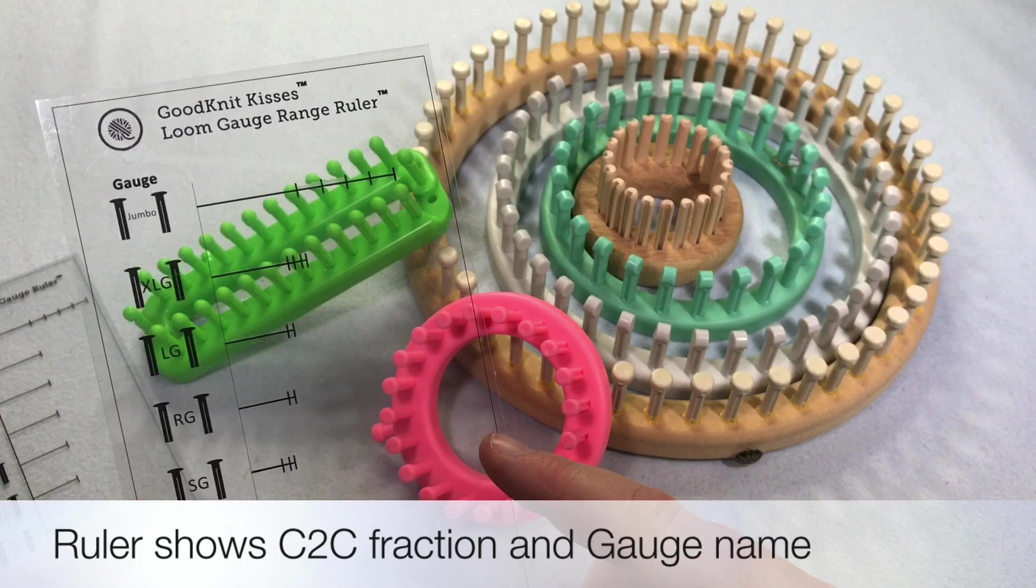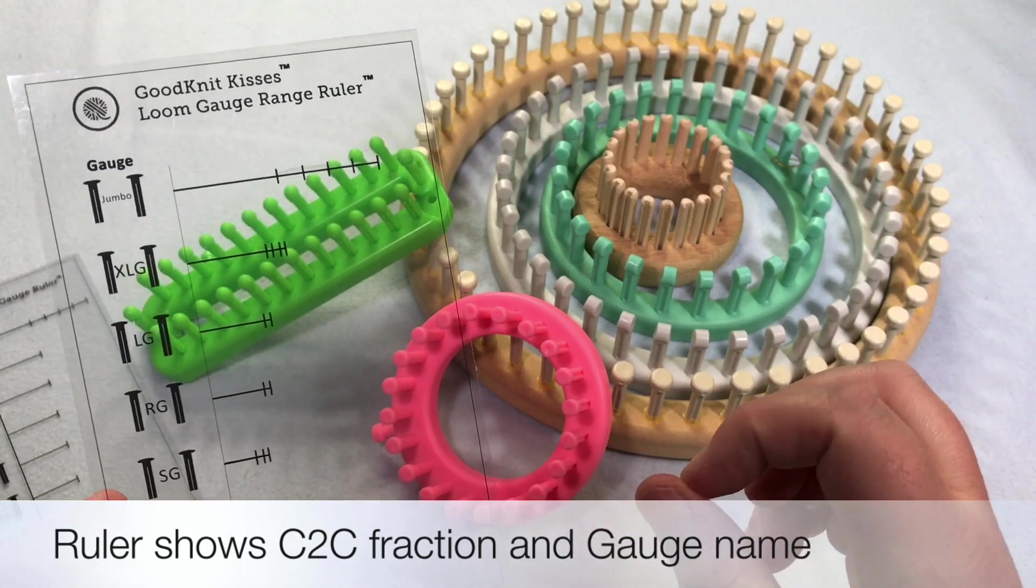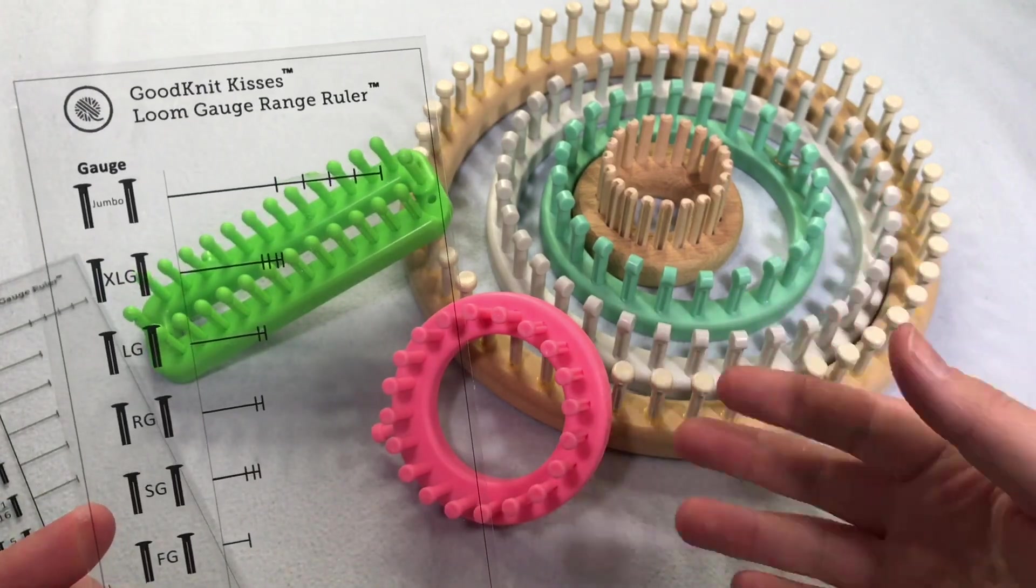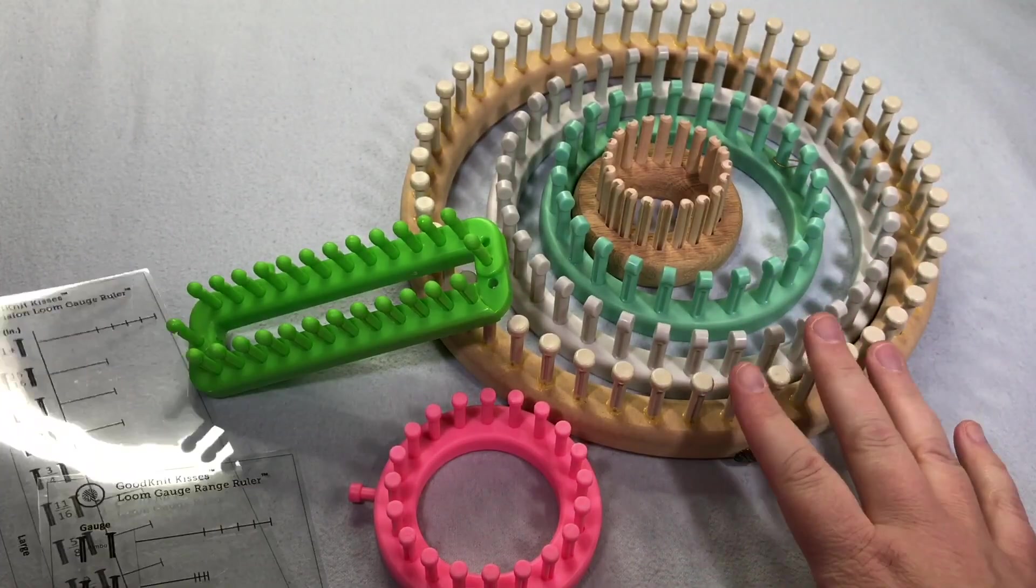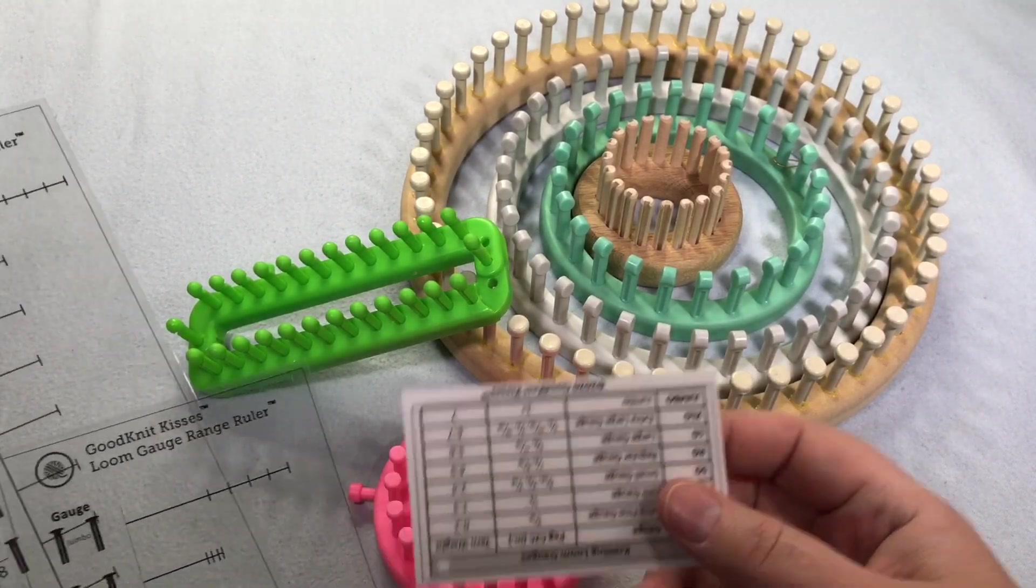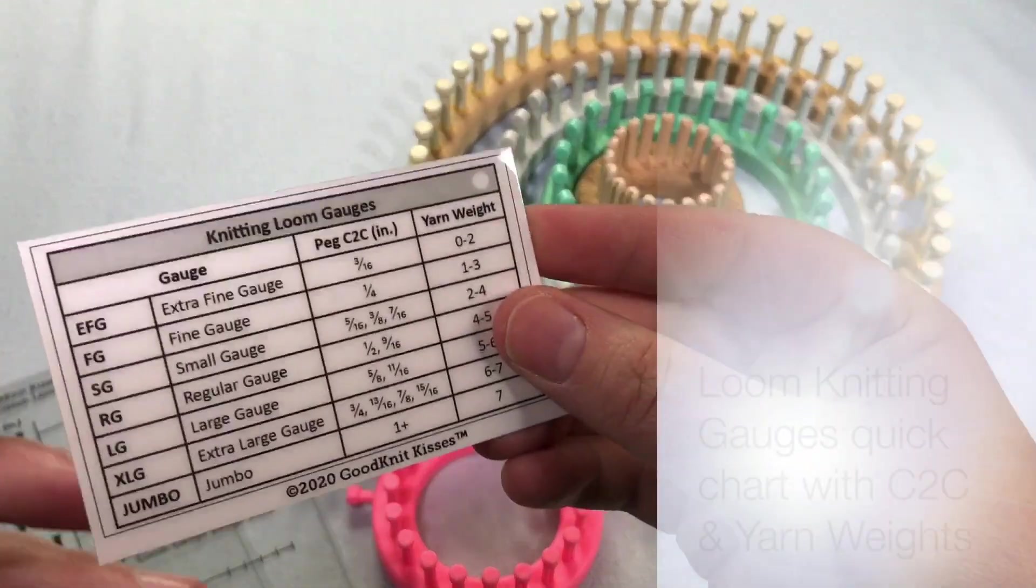So I'm gonna show you how to use a ruler, how to get the ruler, and best practices on printing the ruler. All right, I've got a selection of a few looms here. And let's say I wanna find out what it is. So I'm gonna look at my little chart. First of all, this little chart comes with it too.